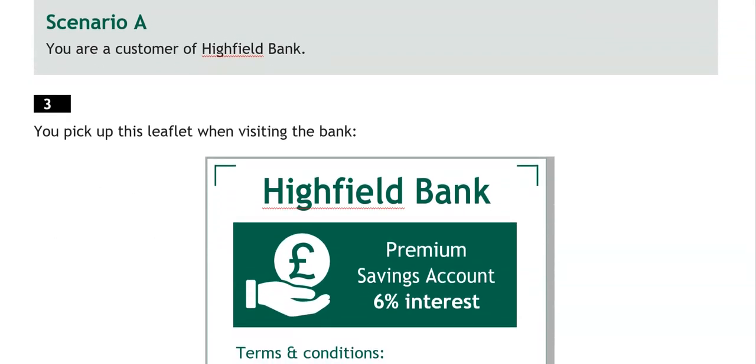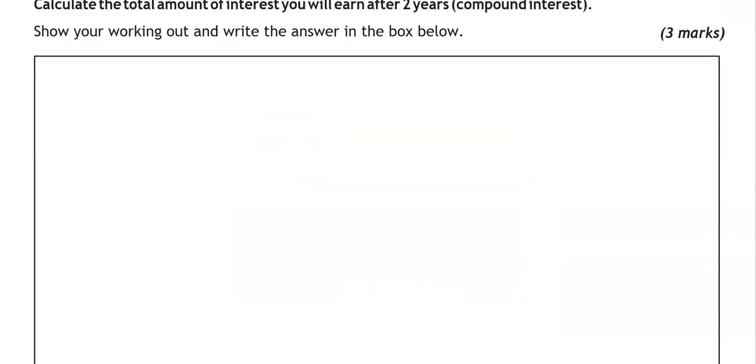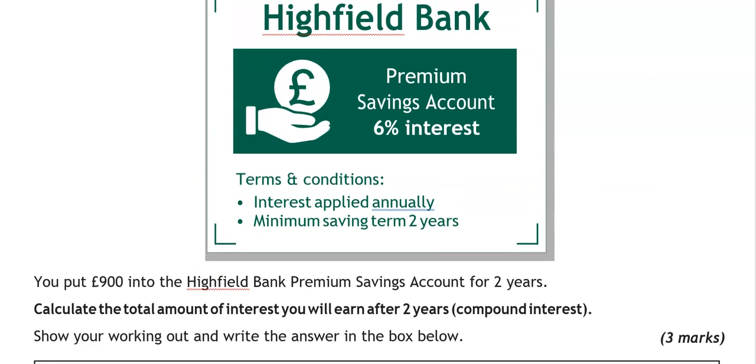You are a customer at Highfield Bank. You pick up this leaflet when visiting the bank, which says premium savings account 6% interest. Terms and conditions. Interest applied annually. Minimum savings term 2 years. You put £900 into the Highfield Bank premium savings account for 2 years. Calculate the total amount of interest you'll earn after 2 years. Compound interest. Show your working out and write the answer in the box below.